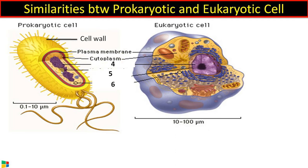Then there is cytoplasm — the matrix which contains DNA, plasmid, ribosomes, etc. in the case of prokaryotic cells, whereas in eukaryotic cells all organelles are present in this semi-fluid cytoplasm. It is a metabolic center.